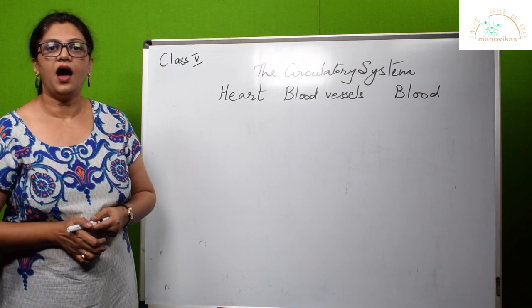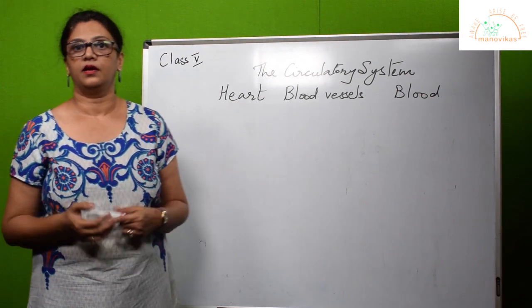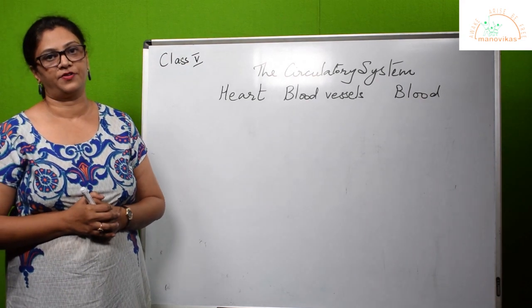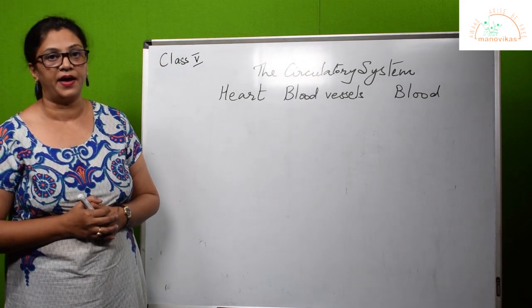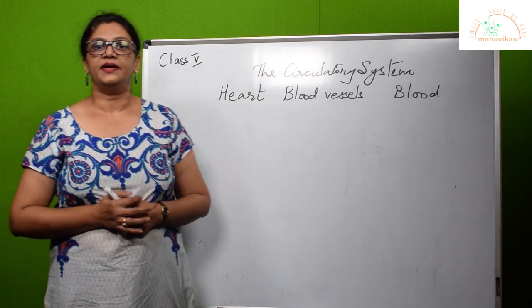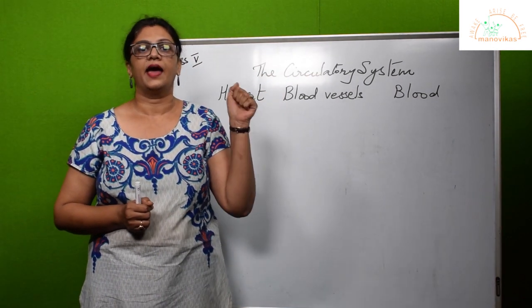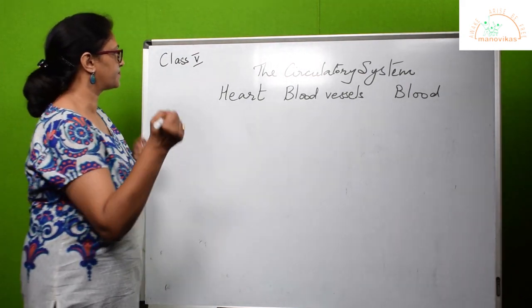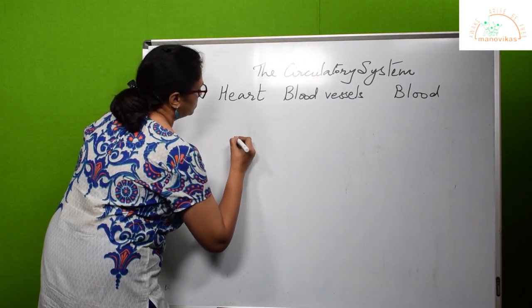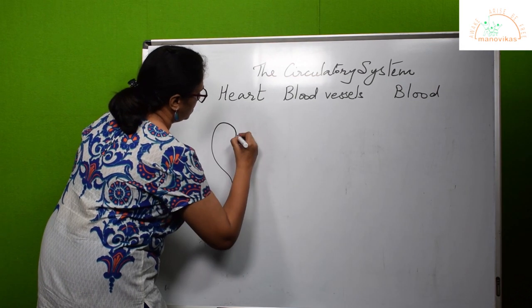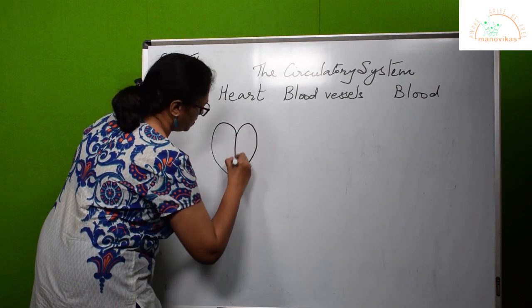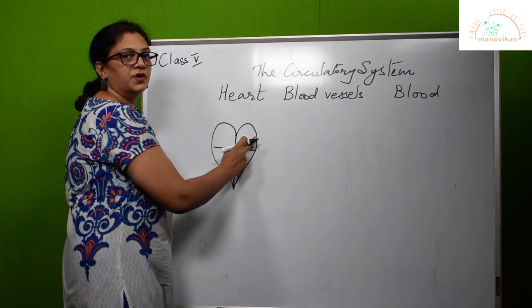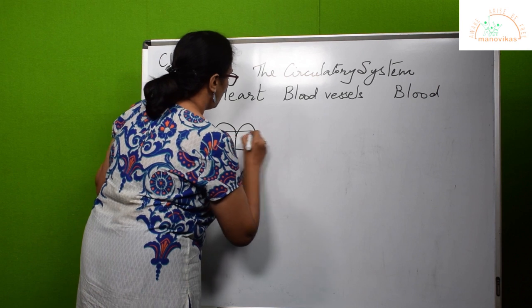First we take the heart. The heart is a muscular organ which is located in the chest, a little to the left. It is protected by the ribcage. It is the size of your fist. The heart is made up of four chambers. The upper two chambers are called the auricles.